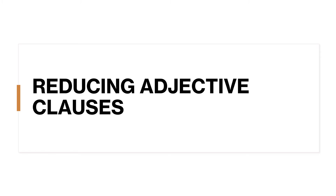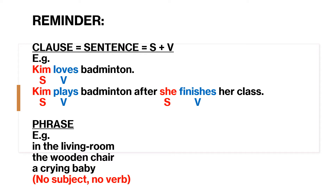Reducing adjective clauses. Please remember: a clause is the same as a sentence, which has a subject and verb. For example, 'Kim loves badminton' and 'Kim plays badminton after she finishes her class.' In these sentences, Kim is the subject and 'loves' is the verb. In the subclause 'after she finishes her class,' 'she' is the subject and 'finishes' is the verb. However, a phrase is different from a clause — a phrase does not have a subject and verb. For example: 'in the living room,' 'the wooden chair,' 'a crying baby.' These phrases do not have a subject nor a verb.